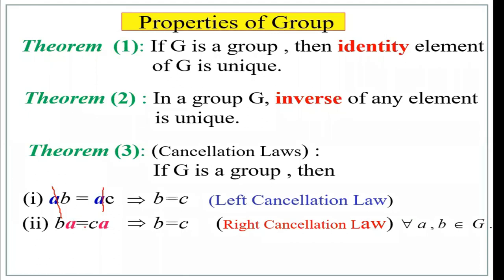Similarly, we have the right cancellation law: BA equals CA implies B equals C, where A is cancelled from the right-hand side. For all A, B belonging to G, provided A is not a zero element — if A is zero, this rule cannot be applied. These are the three properties: identity element is unique, inverse is unique, and cancellation laws hold in groups.